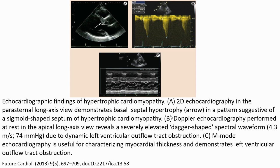These are echocardiographic findings of hypertrophic cardiomyopathy. A: 2D echocardiography in the parasternal long axis view demonstrates septal hypertrophy suggestive of hypertrophic cardiomyopathy. B: 2D echocardiography performed at the apical long axis view revealed a severely elevated gradient due to dynamic left ventricular outflow tract obstruction. C: M-mode echocardiography is useful for characterizing myocardial thickness and demonstrating left ventricular outflow tract obstruction.